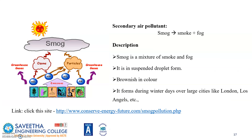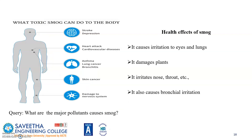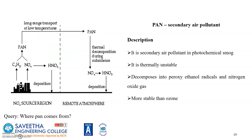A secondary pollutant is smog — it is a mixture of smoke and fog, and is brownish in color. It is formed of particulate matter and normally occurs during winter days and overcast days, as was observed in London. Health effects of smog include irritation to eyes, damage to plants, irritation to nose and throat, and bronchial irritation.